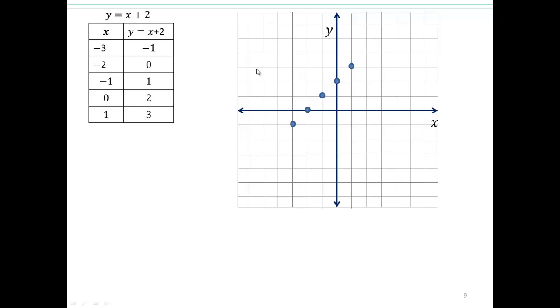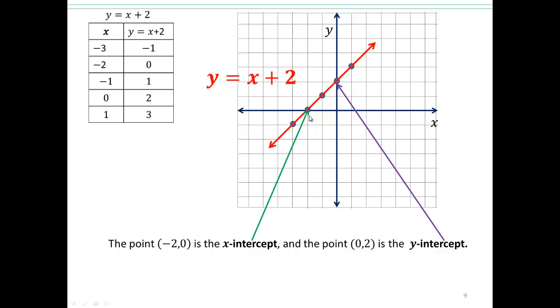What do you think the graph is going to look like? Good. This line is going to be y equals x plus 2. The point negative 2, 0 is your x-intercept, and the point 0, 2 is your y-intercept. Remember when the y-coordinate is 0, then x, which is negative 2 here, negative 2, 0 is your x-intercept. When the x-coordinate is 0, we end up with y equals 2, so 0, 2 is your y-intercept.